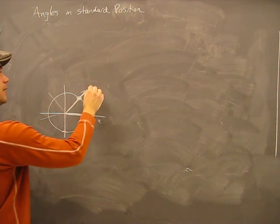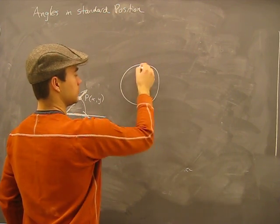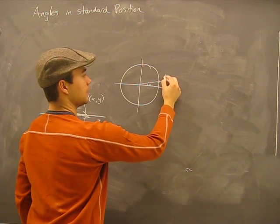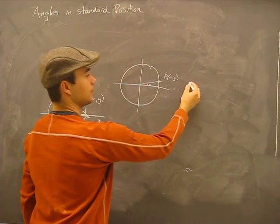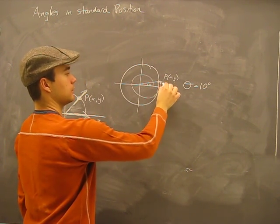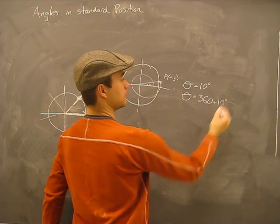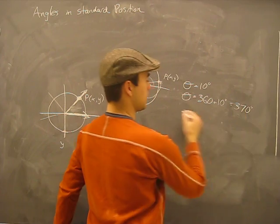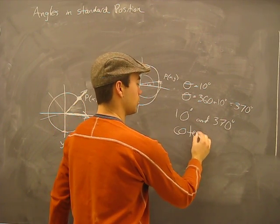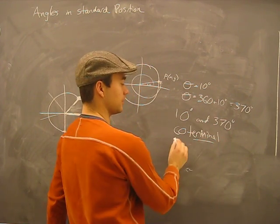For example, if this was a ten degree angle, and this is point P, our angle theta equals ten degrees, and the angle three hundred and sixty plus ten, that's three seventy. Ten degrees and three seventy degrees are co-terminal.